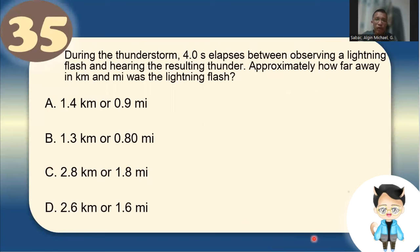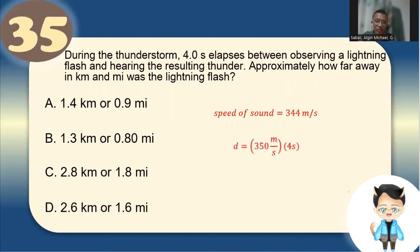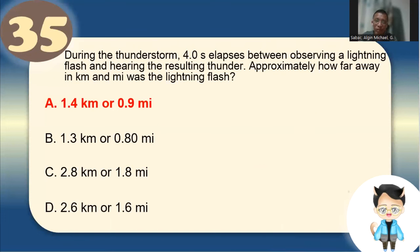Number 35: During a thunderstorm, 4.0 seconds elapses between a lightning flash and the resulting thunder. How far was the lightning? Using speed of sound ≈ 344 m/s (approximated as 350): distance = 350 × 4 ≈ 1,400 m = 1.4 km or 0.9 miles.